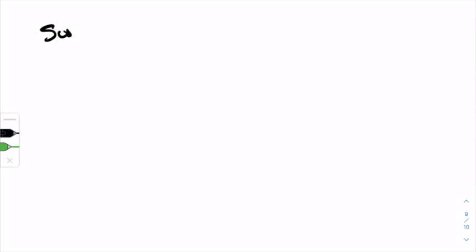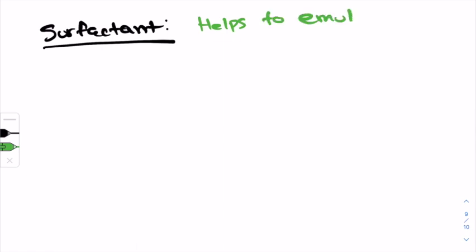Next is surfactants. A surfactant are used to emulsify oil and water to create an emulsion. It helps to emulsify oil and water.